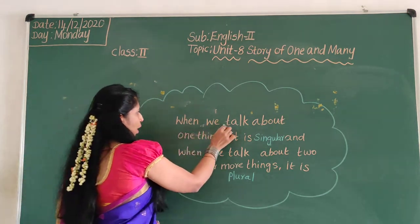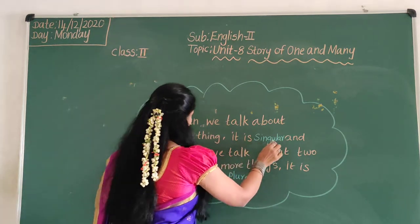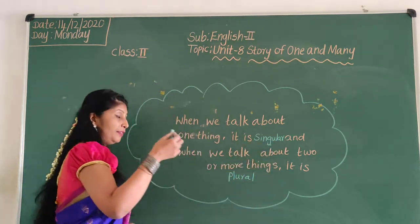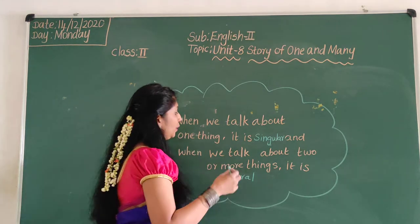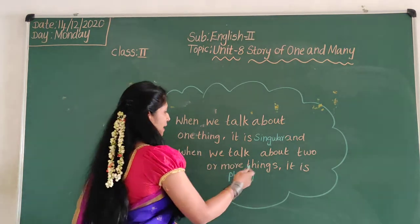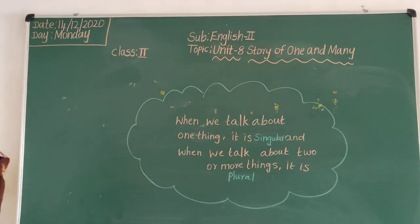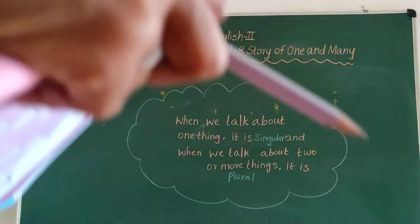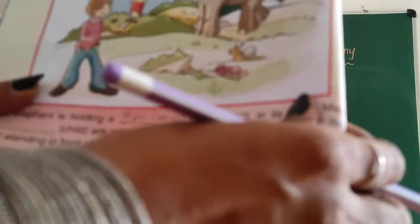When we talk about one thing, it is singular. And when we talk about two or more things, it is plural. OK, take out your grammar book, children — page number 58.